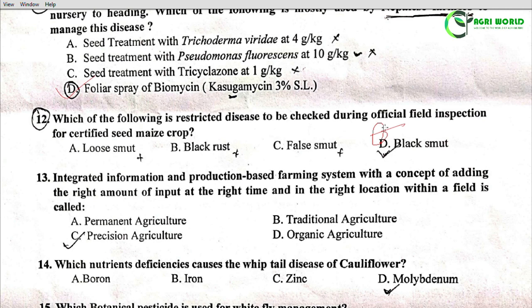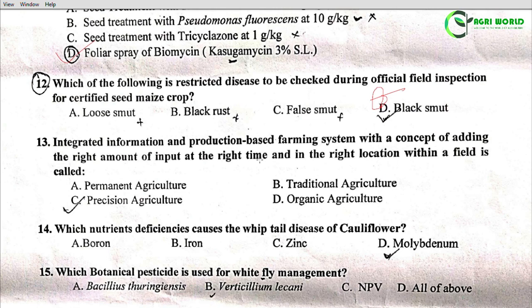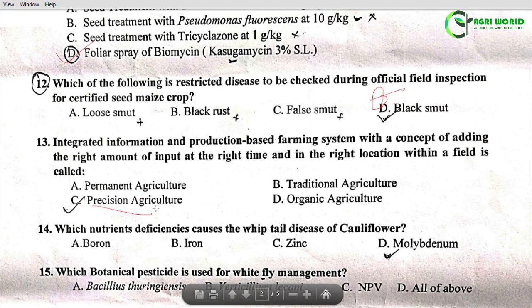Question 13: Integrated information and production-based farming system with the concept of adding the right amount of input at the right time and in the right location within a field is called: Permanent Agriculture, Traditional Agriculture, Precision Agriculture, or Organic Agriculture. The correct answer is Option C: Precision Agriculture.